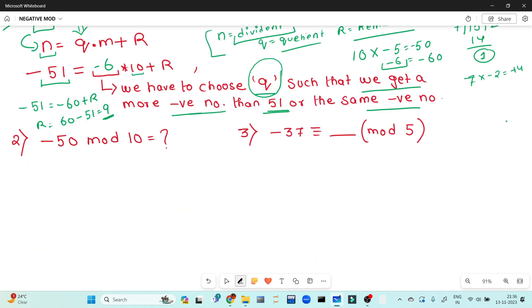So we have minus 50 mod 10. Minus 50 equals minus 50 plus r, where r equals 0. This demonstrates method 1 for finding the modulus of negative numbers. The value of r, the remainder, is always the final answer.